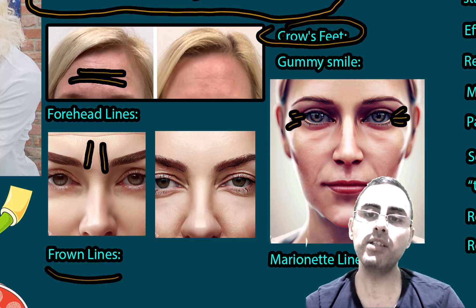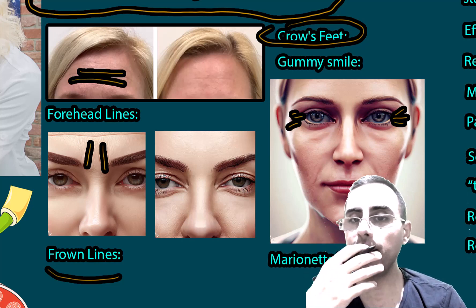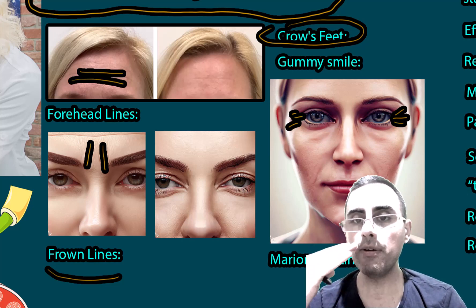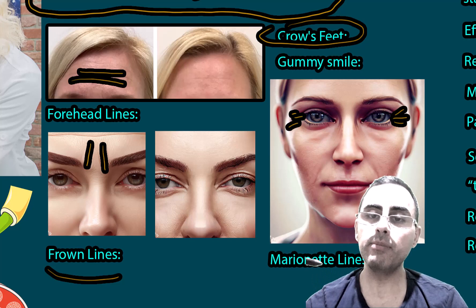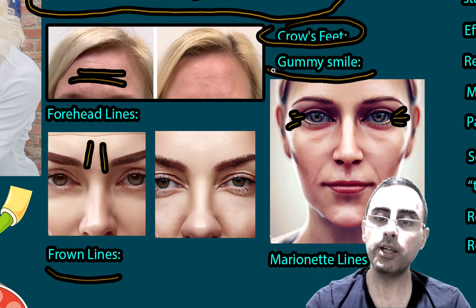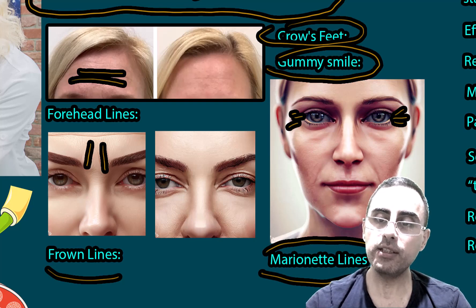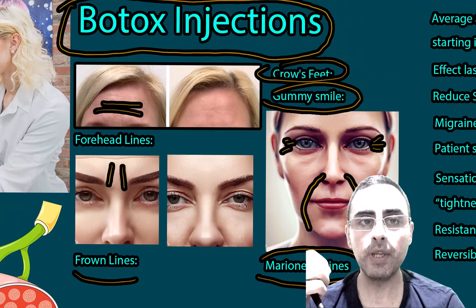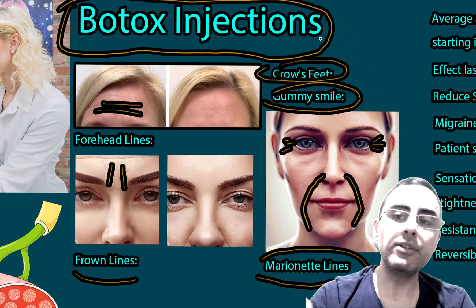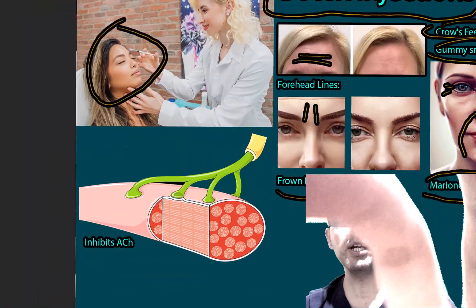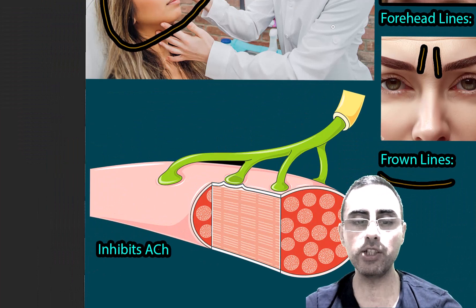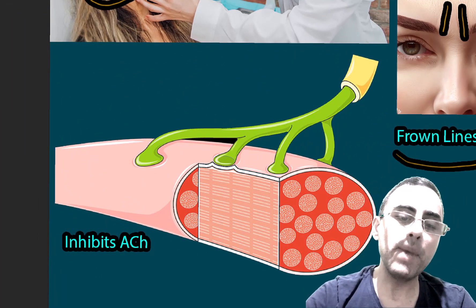Botox is also used for crow's feet — the horizontal lines around the eyes — gummy smile, which is when a person smiles and their upper lip goes too far up exposing the gums, and marionette lines, which are the lines around the lips.